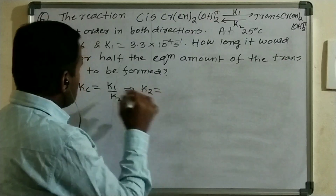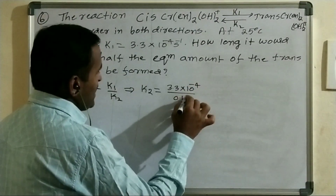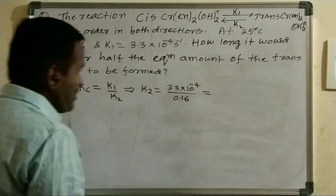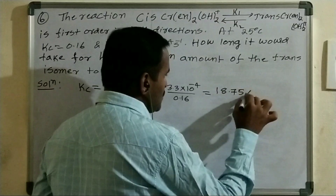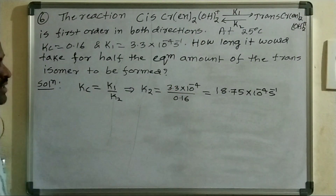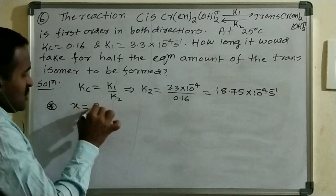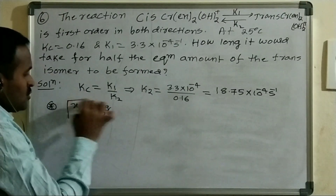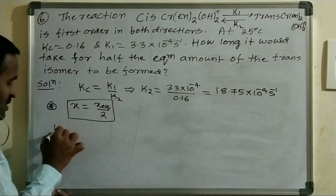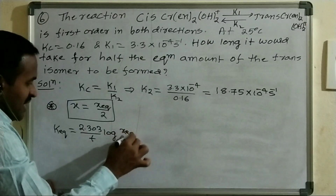K2 = (3.3×10⁻⁴) / 0.16 = 18.75×10⁻⁴ s⁻¹. At particular time t, X = X_eq/2. Using: K1 + K2 = (2.303/t) × log(X_eq / (X_eq − X_eq/2)) = (2.303/t) × log 2.